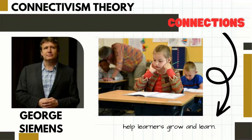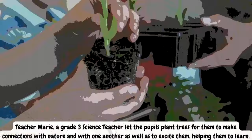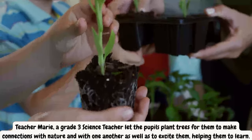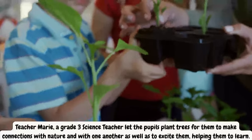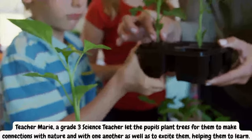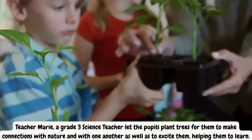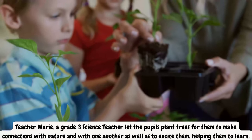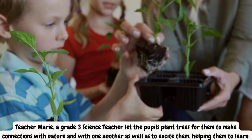Lastly, one of the most recent ideas in educational learning theories is Connectivism, which was developed by George Siemens. It emphasizes the notion that connections help people grow and learn. Learning might come from hobbies, objectives, and other individuals. For example, Teacher Marie, a graduate science teacher, let her pupils plant trees so they could make connections with nature and with one another, exciting them and helping them to learn.